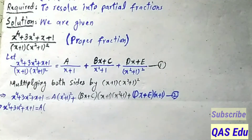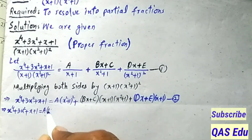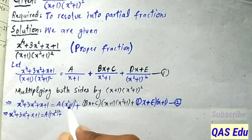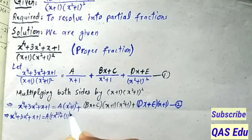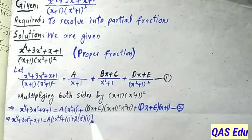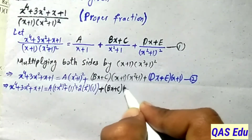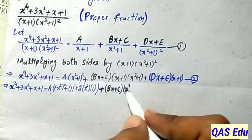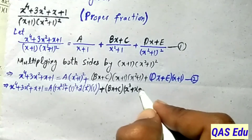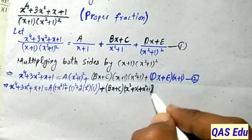Expanding equation number 2: applying (a + b)² formula. For A times (x² + 1)²: expanding gives x⁴ + 2x² + 1. So A times (x⁴ + 2x² + 1) = Ax⁴ + 2Ax² + A. Then expanding (Bx + C)(x + 1)(x² + 1): Bx times x² = Bx³, Bx times 1 = Bx, Bx times x = Bx², and continuing the expansion.